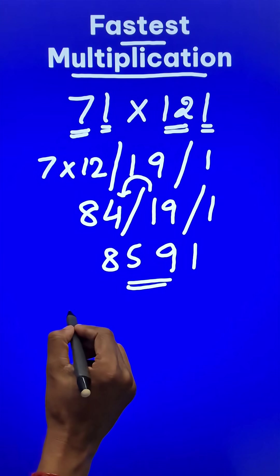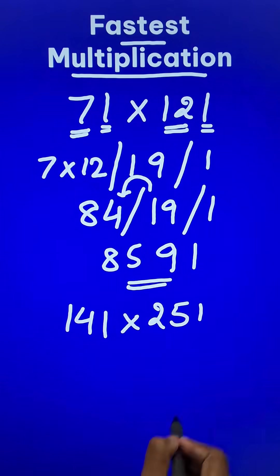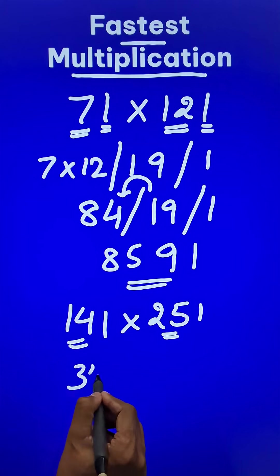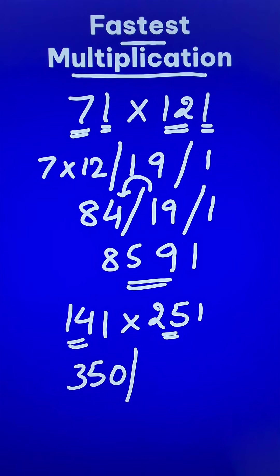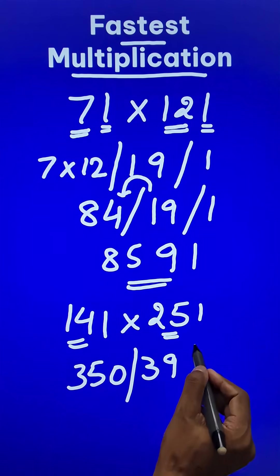Let us test it using 3-digit numbers: 141 times 251. Now you can see the product of 14 and 25 is 350, and then there is the number 14 added to 25 here. This gives 39, and then we have the 1.